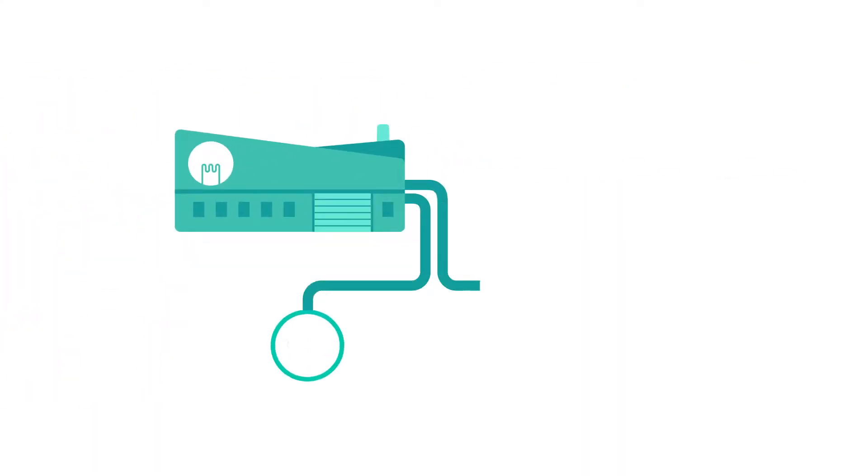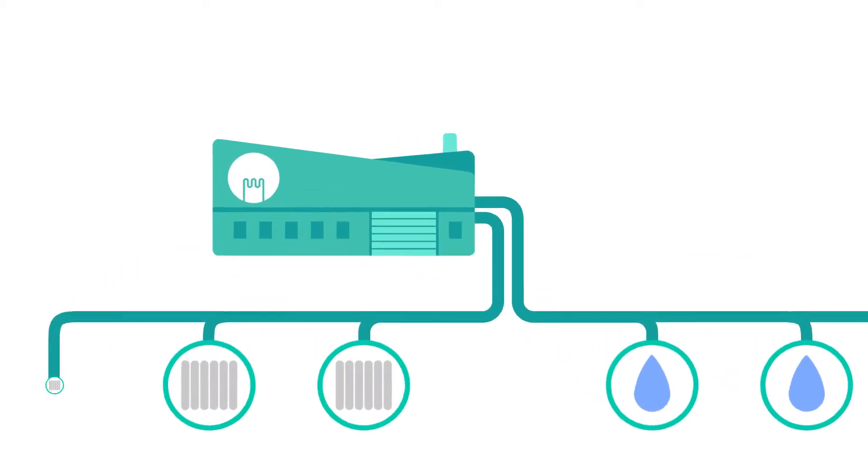Our community energy networks heat radiators and water in the same way as a conventional boiler system. But rather than each property having its own individual boiler, there is a large central heat source that everyone shares, called an energy centre.